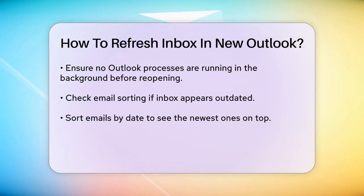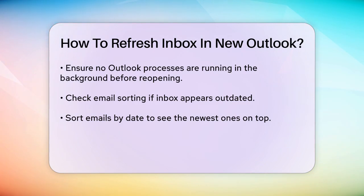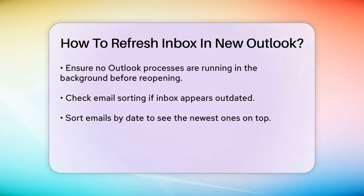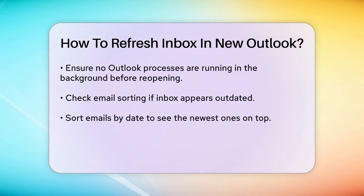Another common issue is with email sorting. If your emails are not sorted by date, it might seem like your inbox isn't updating. To fix this, go to the sorting options and arrange your emails by date with the newest ones on top. In the new Outlook, click on Filter, go to Sort, and choose to sort by date with the newest on top.